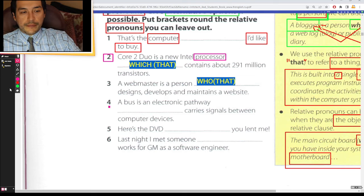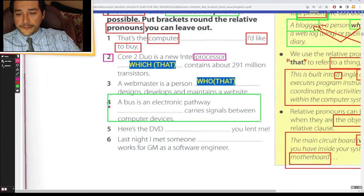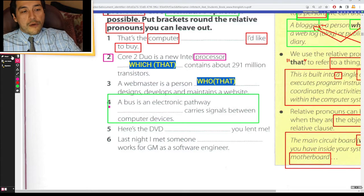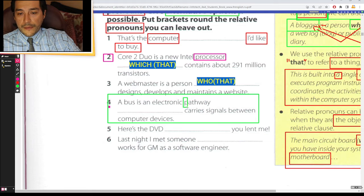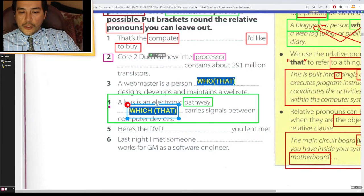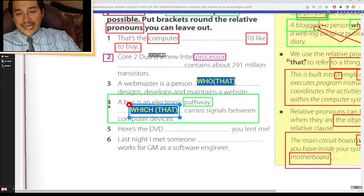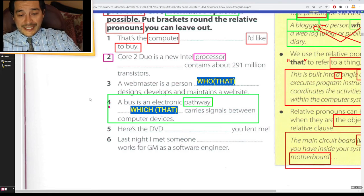Number four, a bus. A bus is an electronic pathway, pathway, person or thing? Which carries, or that carries signals between computer devices.